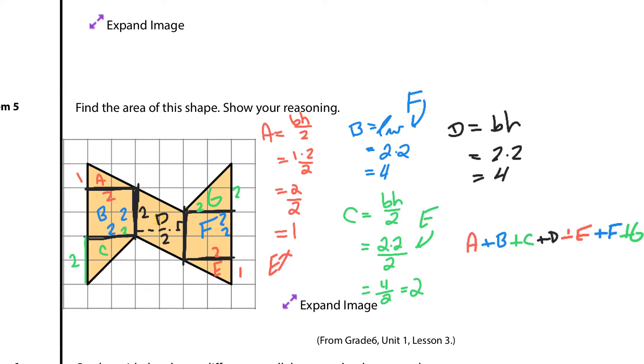So, A was 1, so was E, B was 4, so was F, C was 2, so was G, and D was 4. And so now, if I add these together, 1 plus 4 is 5, plus 2 is 7, plus 4 is 11, plus 1 is 12, plus 4 is 16, plus 2 is 18.